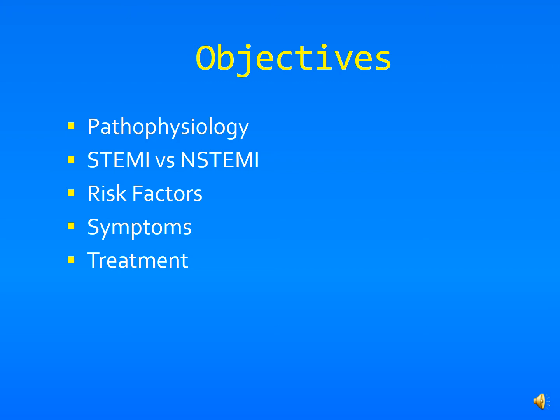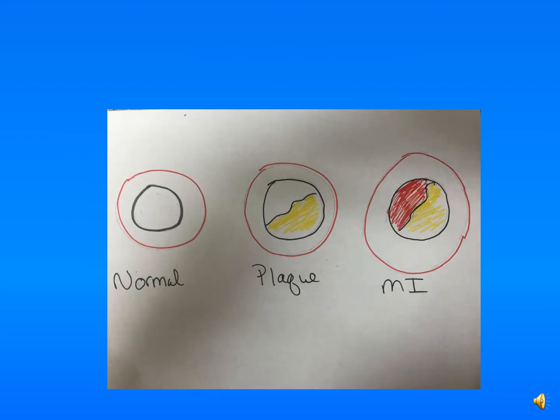A STEMI and a non-STEMI are both heart attacks. On the left you can see a normal lumen — blood can flow through freely. But because of our diets, age, and other risk factors we'll talk about soon, plaque starts to build up in our arteries. When this plaque builds up it can cause an occlusion to the artery, or sometimes this plaque can rupture off.